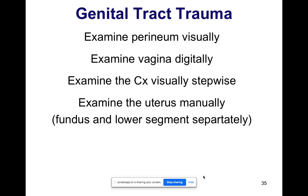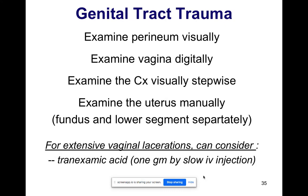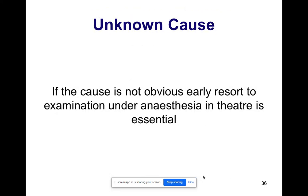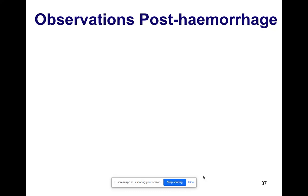For extensive vaginal lacerations, consider tranexamic acid 1 gram slowly IV. You can pack the vagina or insert a balloon tamponade and transfer the patient if you cannot repair. If the cause is not obvious, resort to examination under anaesthesia in theatre. Please take the patient to theatre if you are not sure why the patient is bleeding.